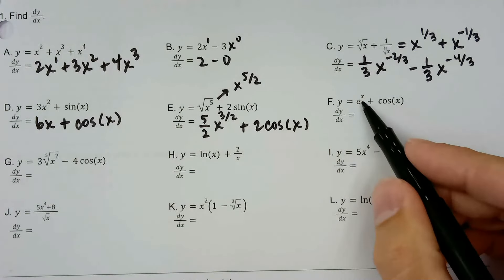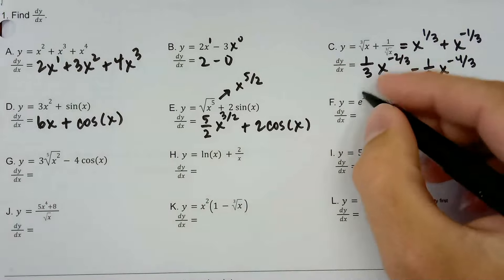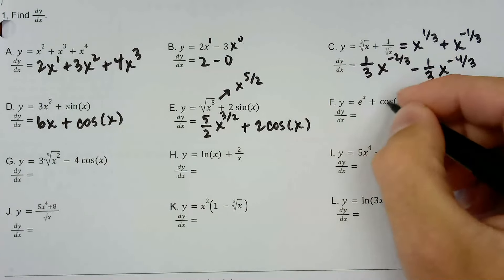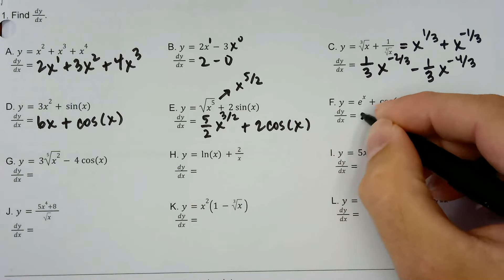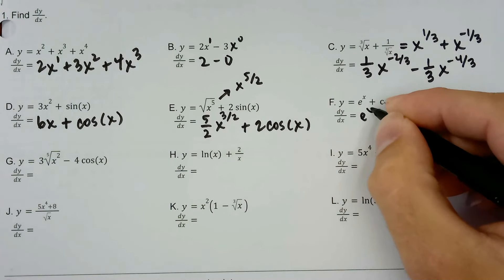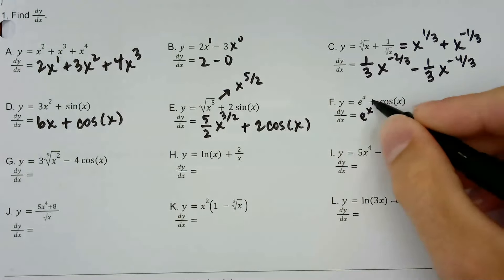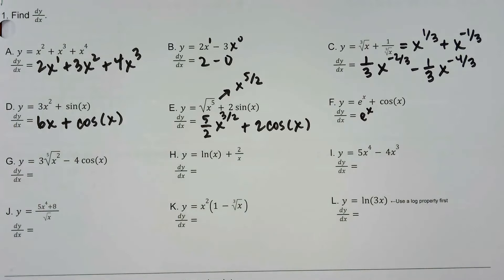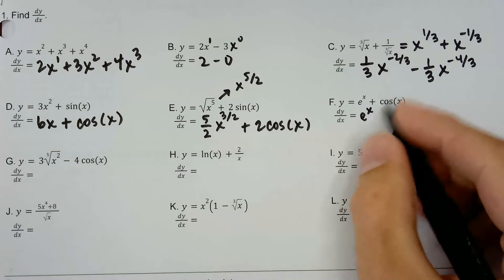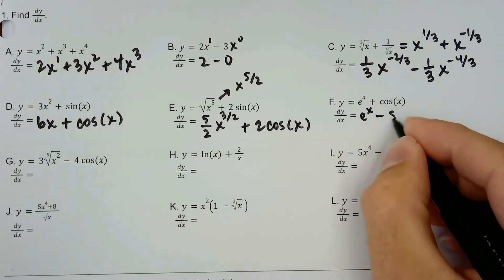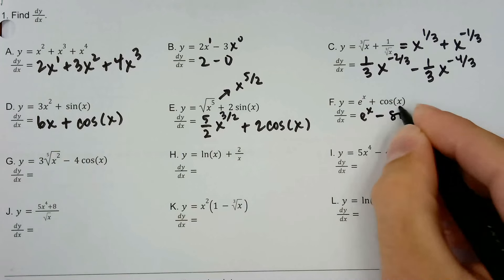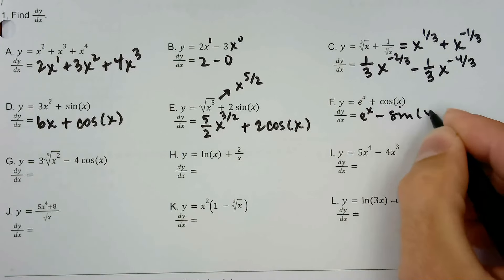We recently learned that e to the x is its own derivative. So if y equals e to the x plus something, dy/dx is going to at least start off with e to the x plus the derivative of that thing. And the derivative of cosine is negative sine, so plus negative sine — or minus sine of x.